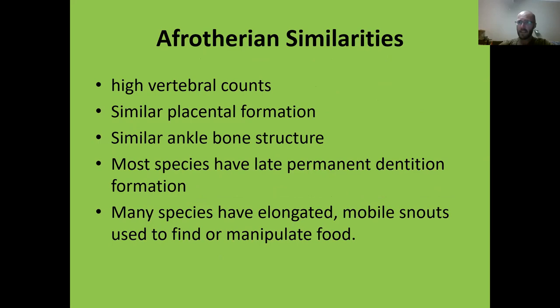Afrotherians share some similarities: they have higher-than-average vertebral counts compared to Laurasiatherians and primates; the placenta forms in a very similar way, quite different from other placental mammals; they all have a similar ankle structure which links them up with the Xenarthrans from South America; and they have late permanent dentition — they only get their permanent teeth much later in life, often only when they're adults.